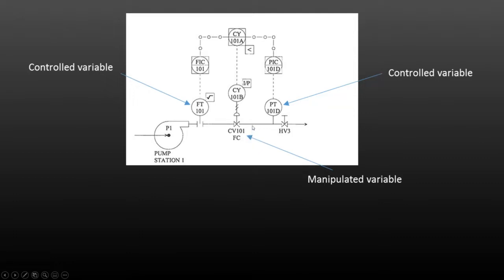The first one is redundancy, a good application for selective control, where you'd have two transmitters measuring the exact same property. If one were to fail, a selective strategy would be able to automatically switch over to the operating device.